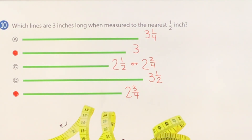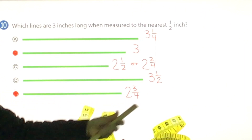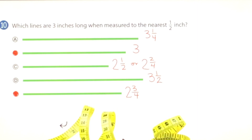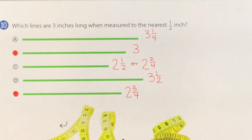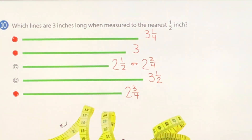Why would A maybe or maybe not work? Connor, why were you thinking A? Because it was kind of low — just barely over three. Could three and one-fourth, if we're talking about the nearest half inch, round back down to three? Yeah. So that actually might work too — there could be three possibilities there.